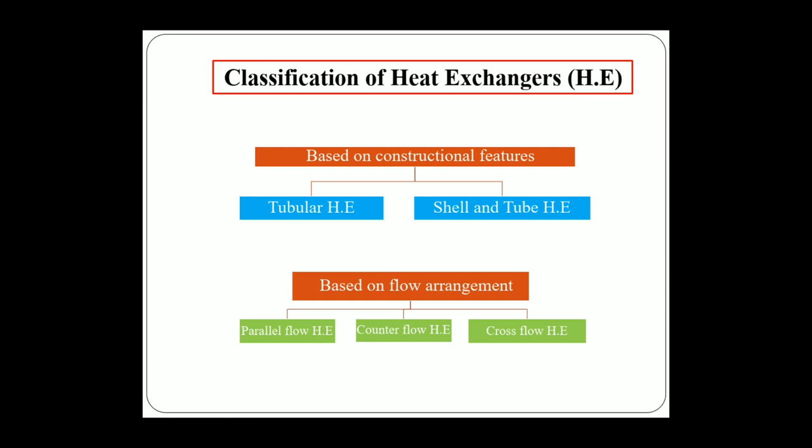As an introduction, we will look at the different classifications of heat exchangers. There are many classifications, but we will discuss two important ones: one based on constructional features, and the other based on flow arrangement. Based on construction, heat exchangers are classified into tubular heat exchangers and shell and tube heat exchangers. Based on flow arrangement, they are classified into parallel flow, counter flow, and cross flow heat exchangers.